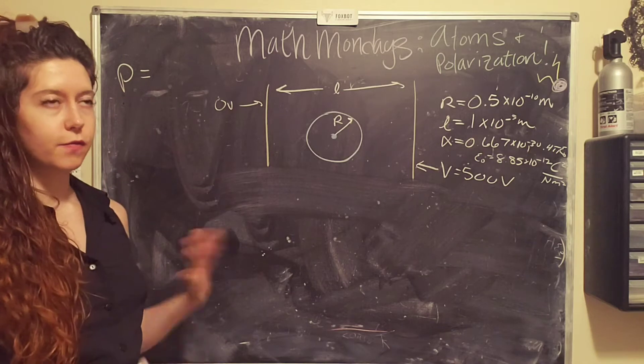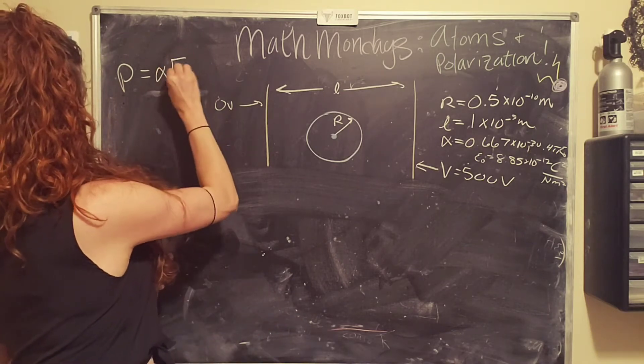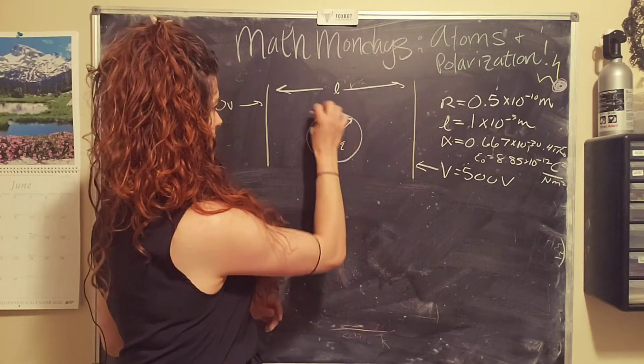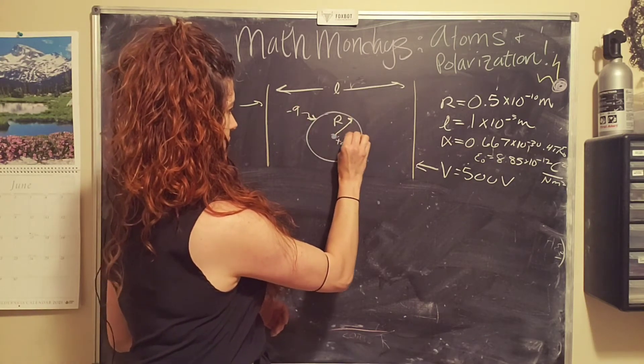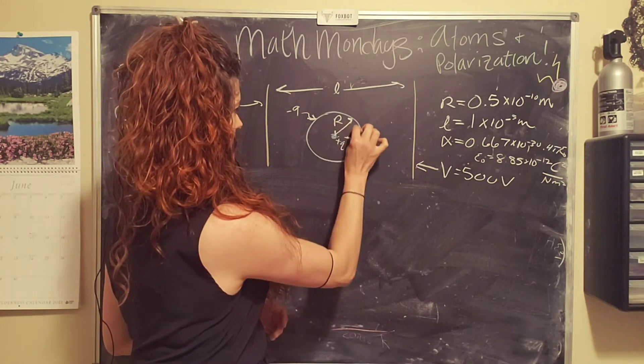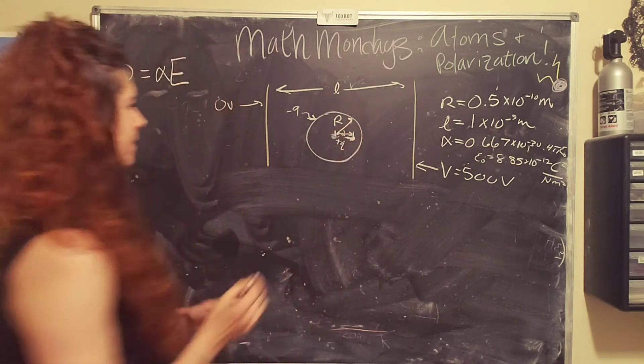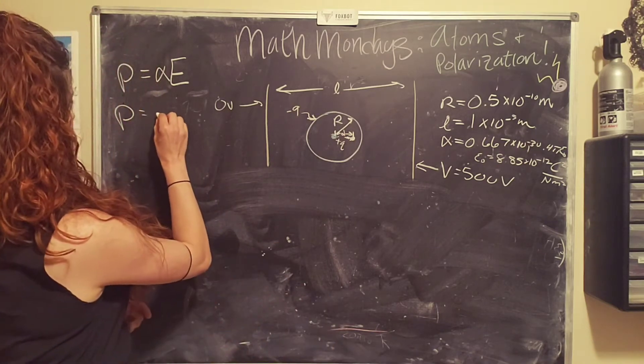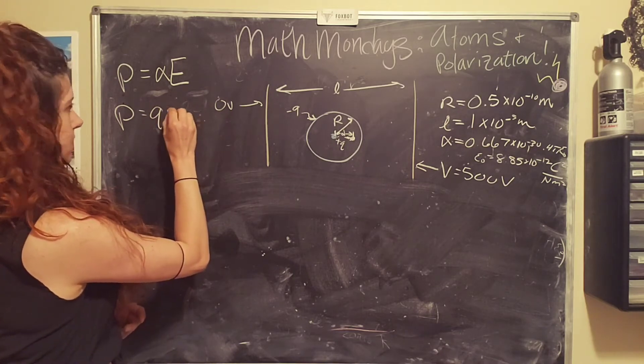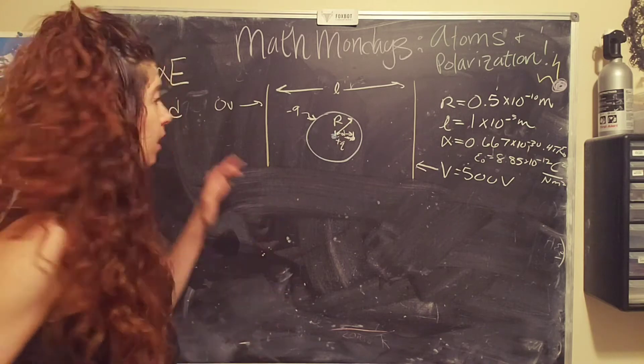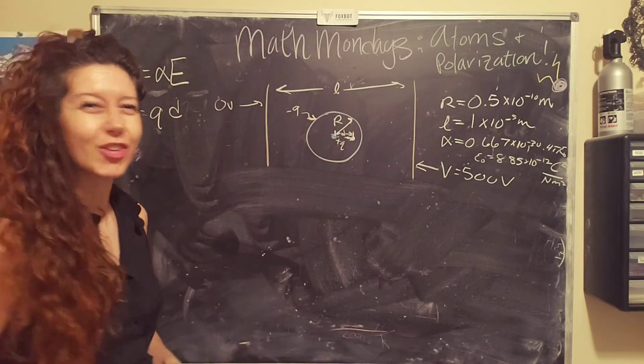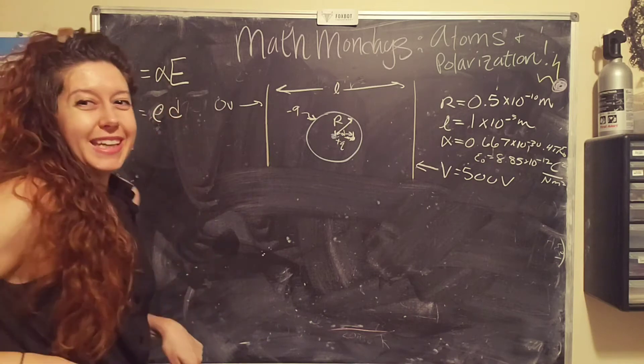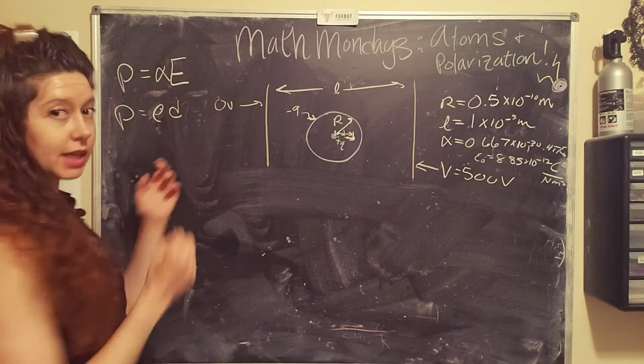So we know that for an atom, this equals alpha times the applied external electric field. And we also know that for equal and opposite charges, so this is positive q, this is negative q, the dipole momentum is equal to q times the separation distance. So in this case, that's going to be qd. And since we have the magnitude of our nucleus and of the electron cloud, plus q and minus q, it equals the charge of an electron. So I'm just going to use e, tiny e, little e.